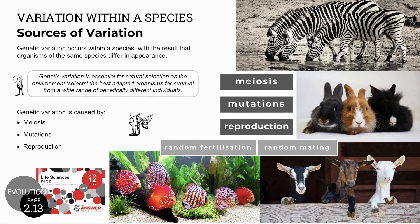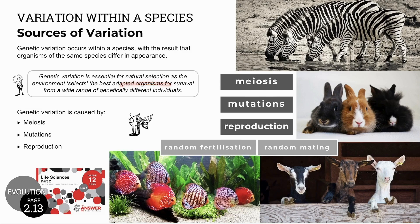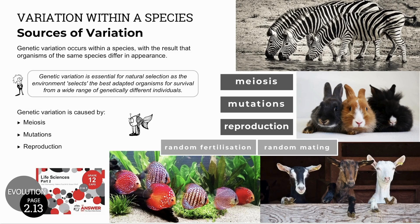These sources of variation mean that organisms of the same species are different in appearance. Natural selection relies on this genetic variation as the environment selects organisms with the best adapted variations from a wide range of genetically different individuals. If there was no variation in a species, the entire population could die out if there was an unfavorable change in the environment. The sources of variation are meiosis, mutations, and reproduction, which includes random fertilization and random mating.